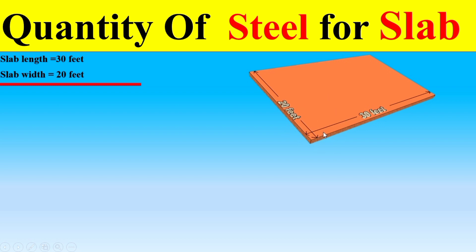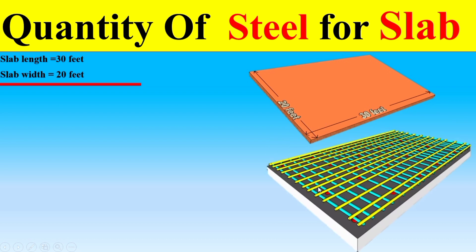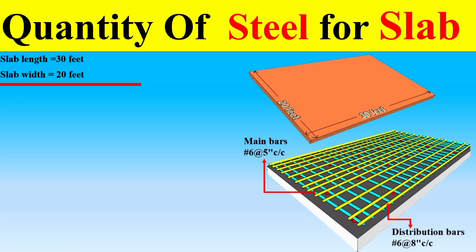In this slab, you will see two types of bars. One is called main bars and the other is called distribution bars. The main bars are provided first in the slab, and after that the distribution bars are provided. Remember that main bars are placed along the shorter span and distribution bars are placed along the longer span.